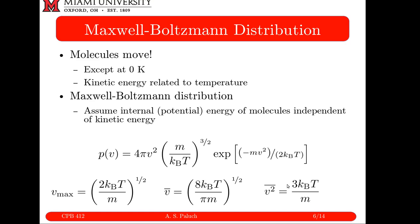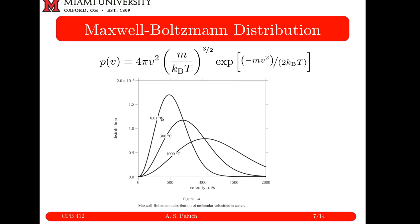Looking at plots of the Maxwell-Boltzmann distribution going from low to high temperatures: as temperature increases, the average speed increases and the probability distribution becomes broader — the standard deviation increases. As temperature decreases, the average speed decreases and the peak narrows.